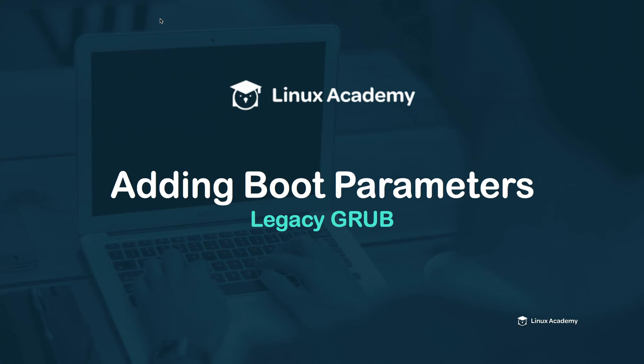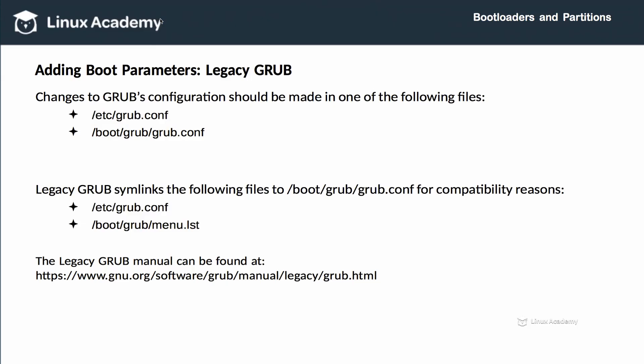Now that we've covered the background and fundamentals, let's look at adding boot parameters to systems that use Legacy Grub. Changes to the Grub configuration when using Legacy Grub should be made in one of the following files: /etc/grub.conf or /boot/grub/grub.conf. Legacy Grub symlinks these files to the grub.conf located in /boot/grub for compatibility reasons. It's worth consulting the official Legacy Grub manual if you find yourself using Legacy Grub.